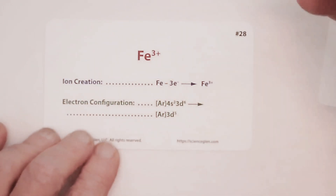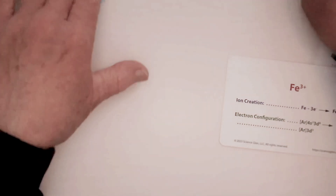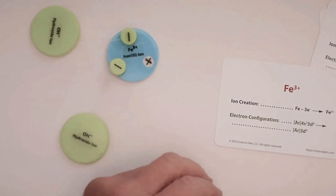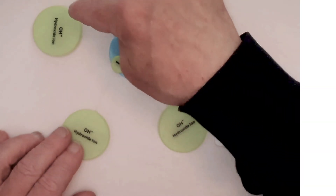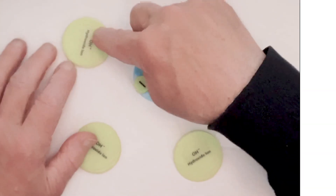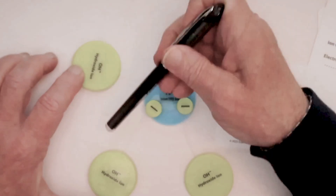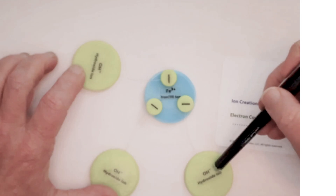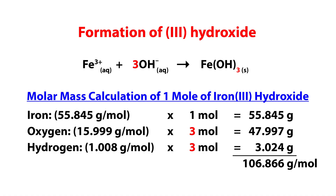In a similar way, how many hydroxides would be required for iron 3? Iron 3 has a charge of 3+, so it's going to need three minus-1s to balance it — three hydroxides. So we have three moles of oxygen and three moles of hydrogen. If you add all those together, it comes up to 106.866 grams.